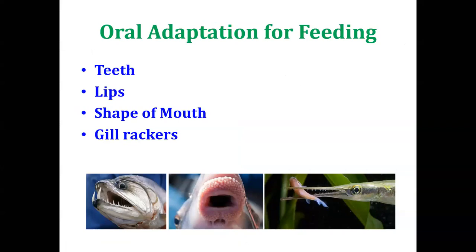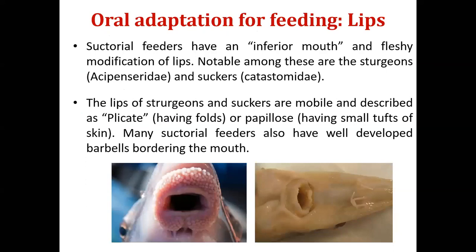The type of teeth present in a fish directly defines its feeding habit. Now, some other oral adaptations for feeding: the type of teeth is one; next we will discuss the lips, the shape of lips, modification or adaptation in the lips, shape of the mouth, and adaptation in the gill rakers. For sectorial feeders or suckers — fish that suck food from the bottom of the water body — they have modified lips.